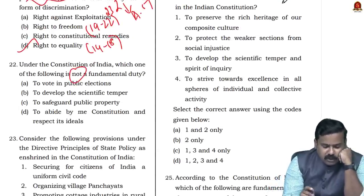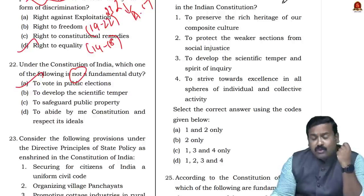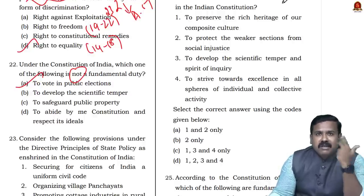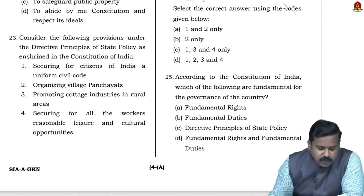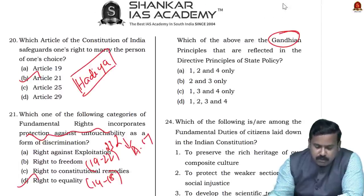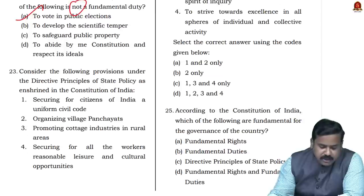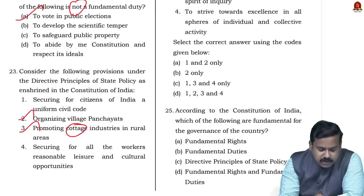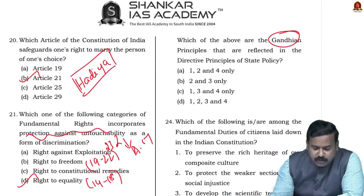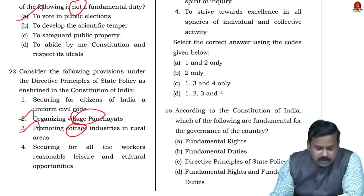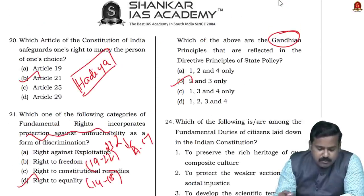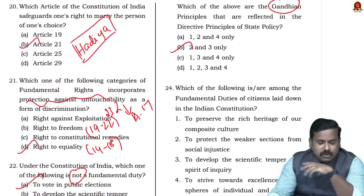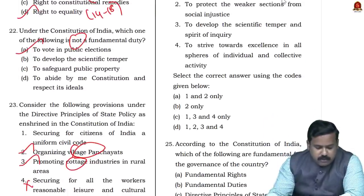Question 22: Which of the following is NOT a fundamental duty? The right to vote in public elections is not a fundamental duty — it has been recommended by committees to be included but has not been added. Question 23: Regarding DPSP, which are Gandhian principles? Gandhian principles definitely include cottage industries and village panchayats. He was silent on uniform civil code. Going by that, the answer is B — options 2 and 3.